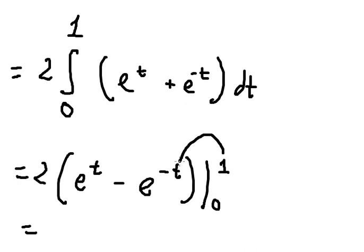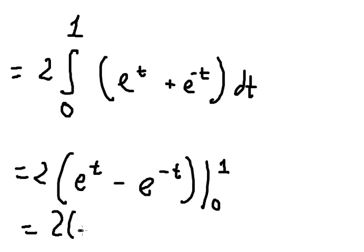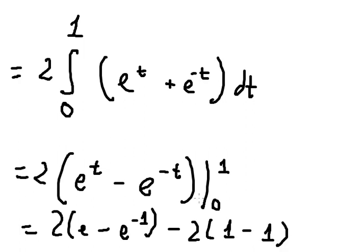We put one in and zero in. Since e to the power of zero equals one, we can solve this and here is the final answer. That is the end — thank you for watching.